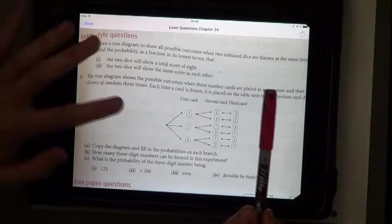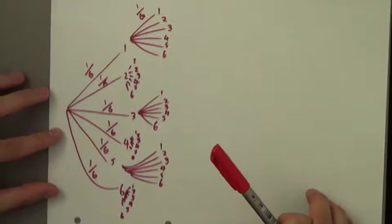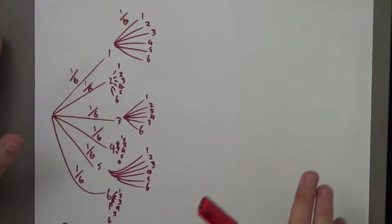Unbiased means there's no favouritism — they should be pretty much equal. I have already pre-drawn this tree diagram for you showing all the possible outcomes. It's not the best drawn, and even if you were to do this on your own piece of paper, you would struggle to get it on one side and see all the numbers. Let me just explain what's happening here.